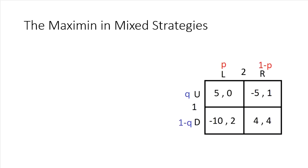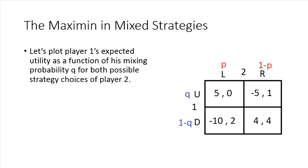So we want to now solve for the Maximin strategy and payoffs for player one in terms of mixed strategies. So what we're going to do is plot player one's expected utility as a function of his own mixing probability. And we're going to do this for both possible strategy choices of player two.